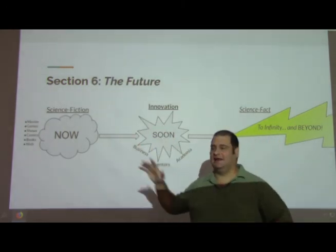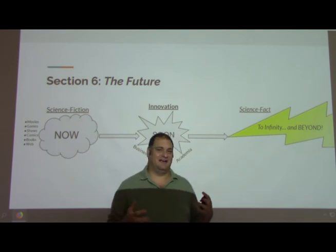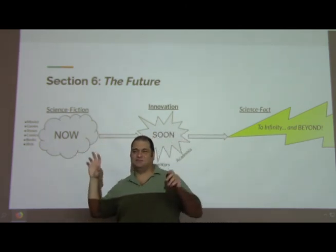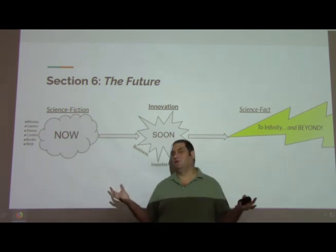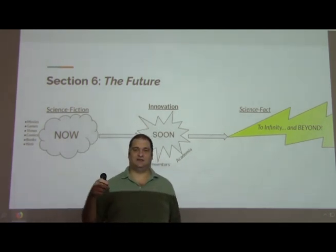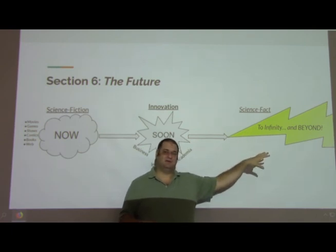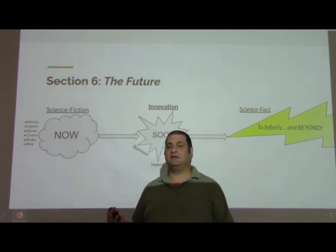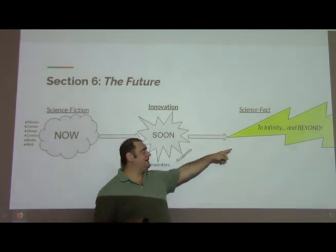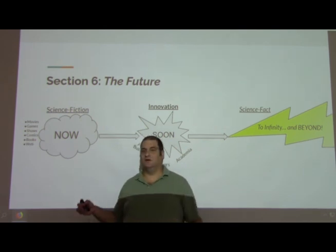Finally, section six: the future! I like this one because it's so much fun — I'm a total dork, a geek. I love comic books, sci-fi, graphic novels, fantasy, all that fun stuff. Look at all the popular science fiction right now: movies, games, shows, comics, books, stuff on the web. Soon there will be innovators who will take that science fiction and turn it into something — they'll try and make it. Beyond that, what do people think is going to happen? There are a lot of articles out there, a lot of speculators who take the now, see who's working on it soon, and extrapolate what the future is going to be like to infinity and beyond. What does the future look like when sci-fi becomes sci-fact?